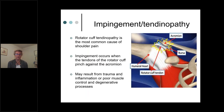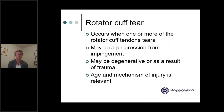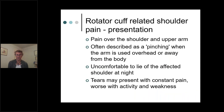Impingement and tendinopathy occur when those tendons get pinched against the acromion as the arm is raised, with the head of the humerus pinching in between. This can be caused by trauma, poor muscle control, or degenerative processes. It doesn't necessarily involve inflammation — the tendon can simply be weakened.